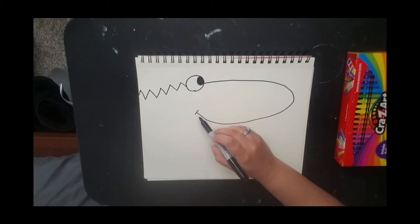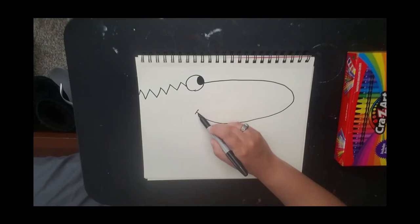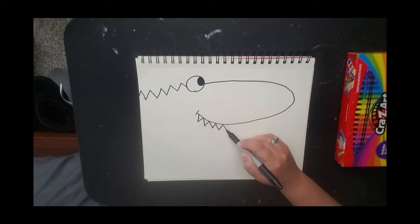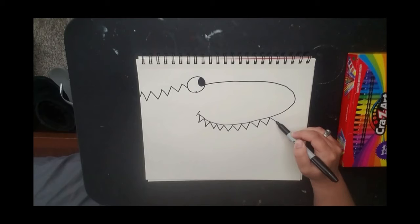From there I am going to do my zigzag line to make his crocodile teeth. So right underneath his smile, look where my point is, I'm going to do a zigzag line all the way down to the tip of his nose for his crocodile teeth. Now he has kind of a cool looking smile going on.